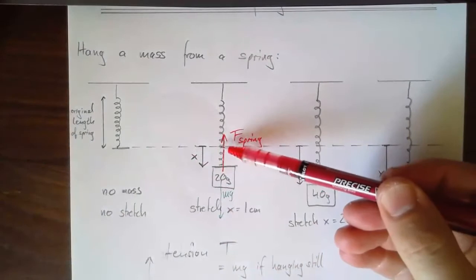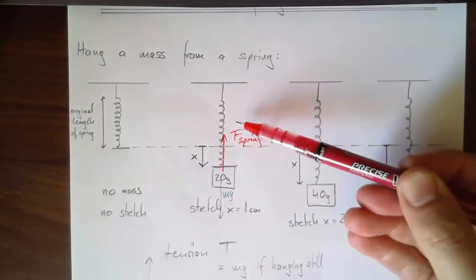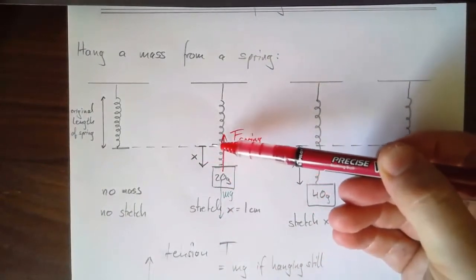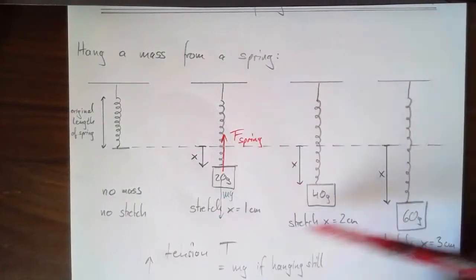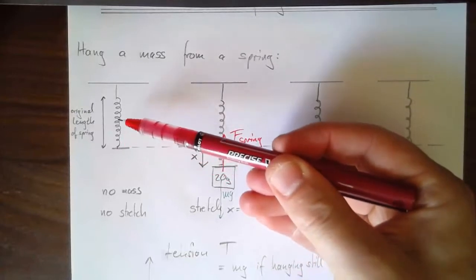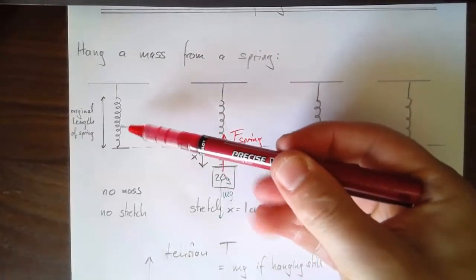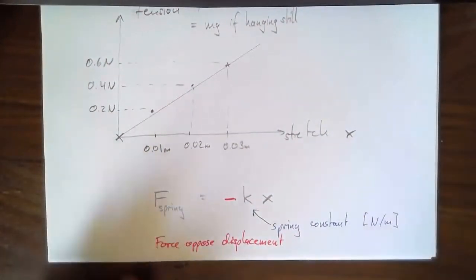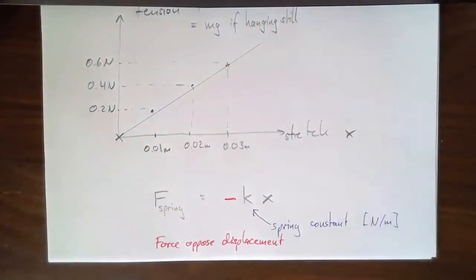If instead I squish the spring by pushing it upward, the spring force would be downward — it pushes back. The spring is always trying to push back towards what we call the equilibrium point, which I'll say more about in just a moment.